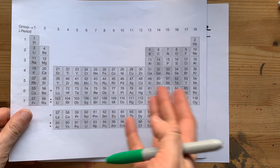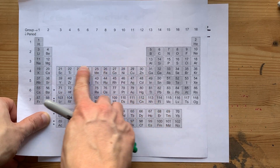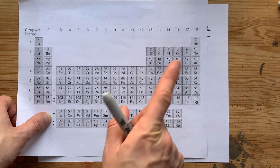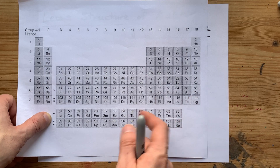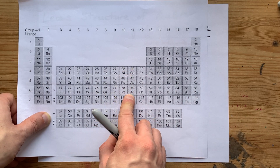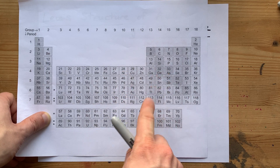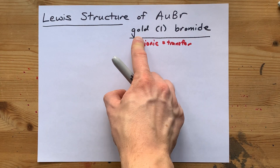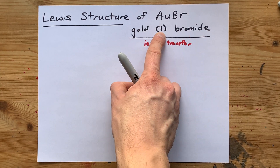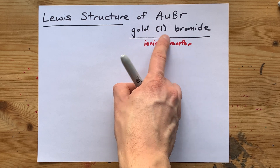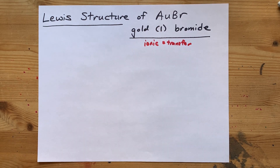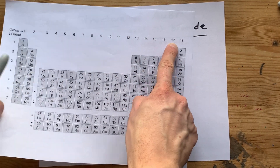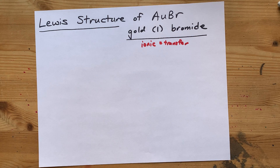Now, gold is a transition metal. It's in this block of the periodic table here, so it can have more than one possible charge. Gold can have a charge of either plus 1 or plus 3. Gold-1-bromide has a charge of 1 — that's obvious from the name. All of the halogens in group 17 want a charge of minus 1.